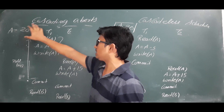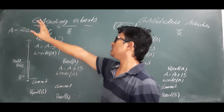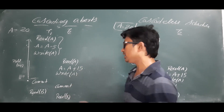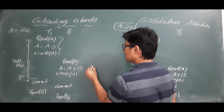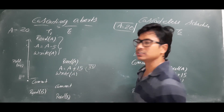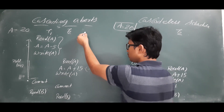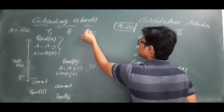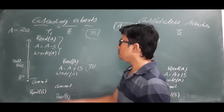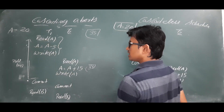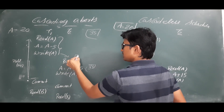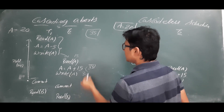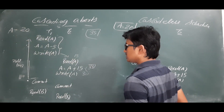Now what is the problem? If transaction one was not there, what would transaction two have read? It would have read A as 20, then 20 + 15 = 35, performed write A making it 35, then committed — meaning permanently stored 35 in the database. But because of transaction one, transaction two read A as 15, computed 15 + 15 = 30, and wrote 30.